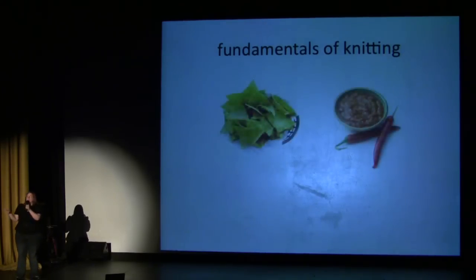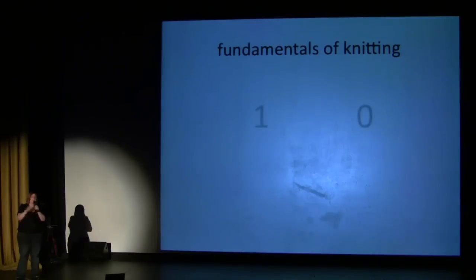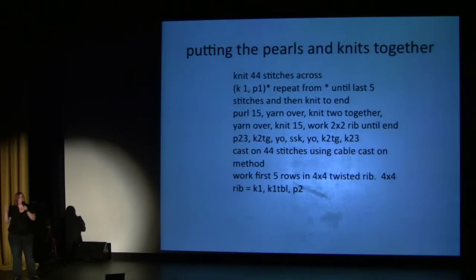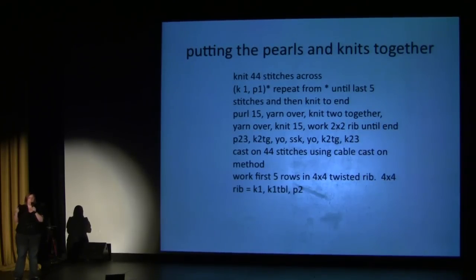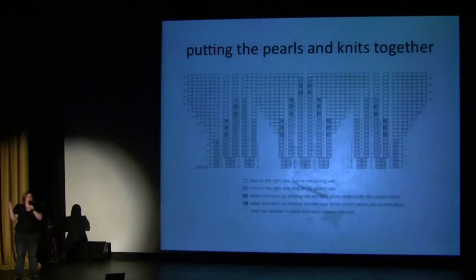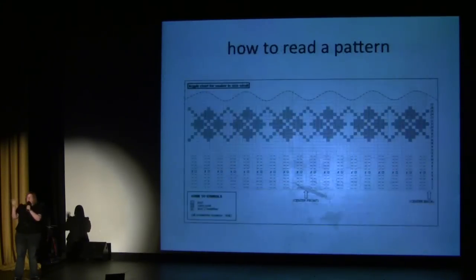When it comes to the fundamentals of knitting, it's very similar. Again, you have two objects, two concepts that are very much related. And like the ones and the zeros in terms of coding and computing, you have the fundamentals of knitting, which are the purl stitch and the knit stitch — the purl looking like a little bump and the knit stitch being a flat stitch. Now, when you put the purls and knits together, you create a pattern. And patterns can be displayed in one of two ways: one is written out, very similar to code, and the other is read via a chart.